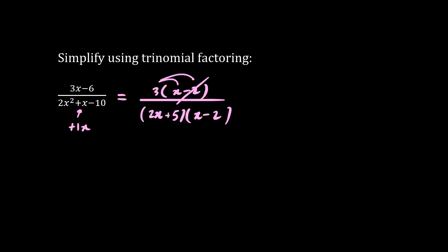And now x minus 2, they cancel. And so we have the simplified form. We have 3 over 2x plus 5.